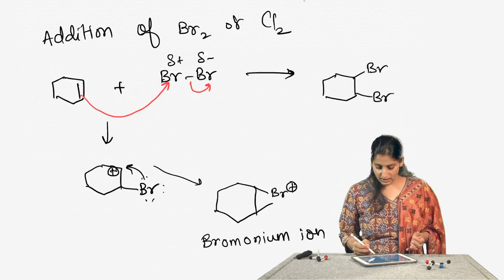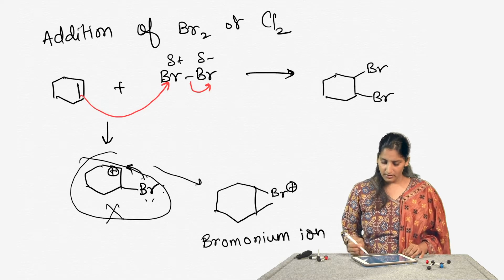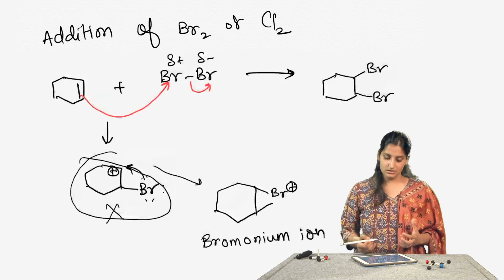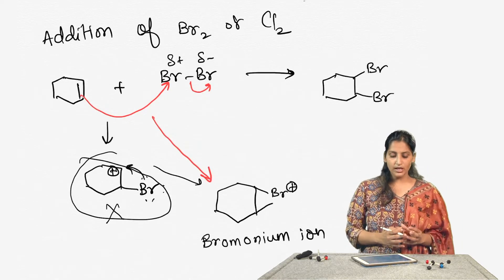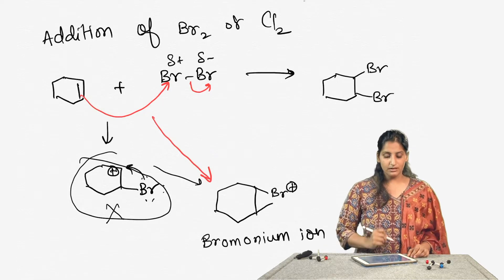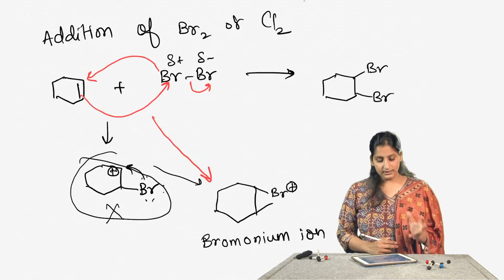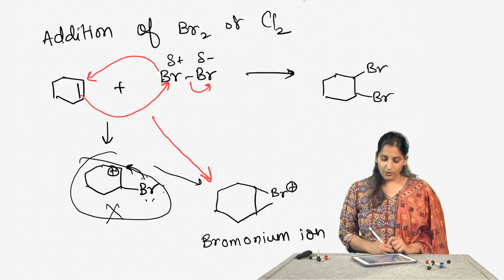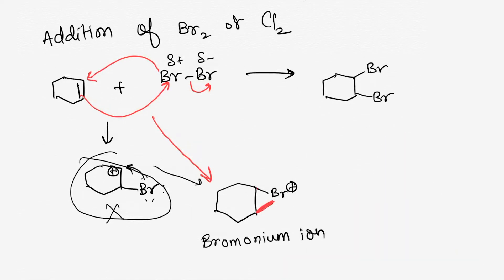This is such a fast process that you don't even see the carbocation — more often you cannot isolate it. More often you will see chemists drawing the formation of the bromonium ion directly, and that is what we are going to adopt: we show the double bond reacting with bromine such that the bromine-bromine bond breaks, and immediately that bromine comes back to form a bond with the other carbon to form the bromonium ion. If you think about the geometry, either the bromine triangle comes towards you or goes away from you — these are the two possibilities.